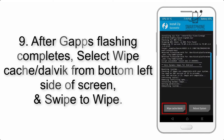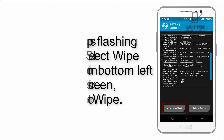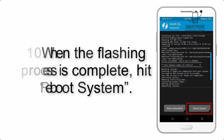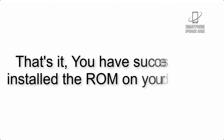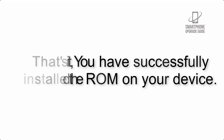Step 9: After GApps flashing completes, select Wipe Cache and Dalvik from the bottom left side of the screen and swipe to wipe. Step 10: When the flashing process is complete, hit Reboot System. That's it — you have successfully installed the ROM on your device.